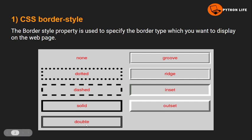The next style is double — this creates two lines for the border. The next ones are groove, ridge, inset, and outset. These are four additional border styles that can be applied.